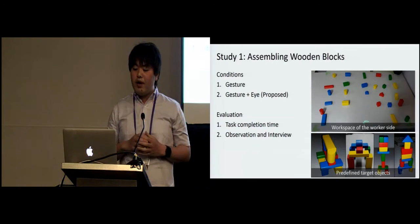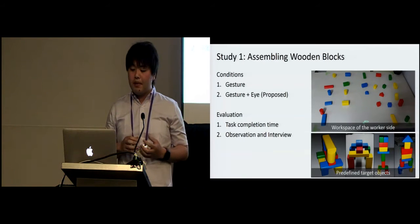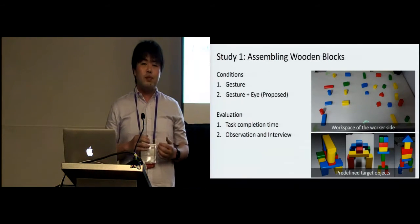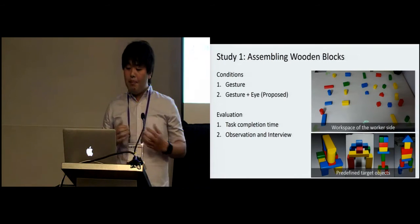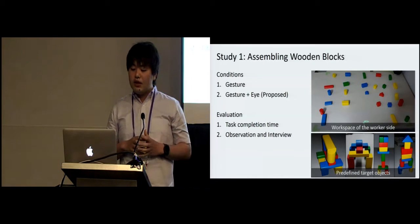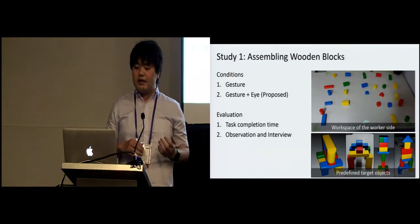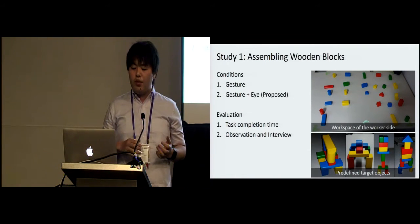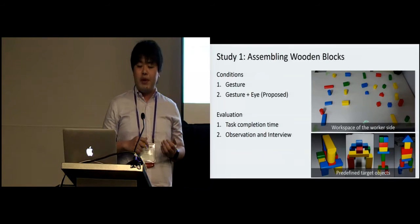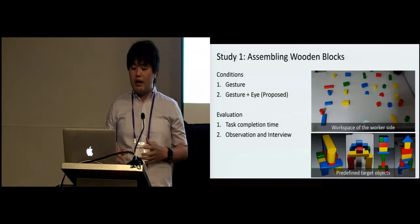In the first study, participants aimed to build predefined objects using wooden blocks. First, we showed a target object to the collaborator. The collaborator then gave instructions to the worker using speech and other instruction modalities. A participant did a task under two conditions: first, they used hand gestures and speech; for the other condition, they were also able to use their gaze for instructions. We evaluated task completion time and also interviewed participants about their experience. Participants formed two-person groups and played both collaborator and worker roles.